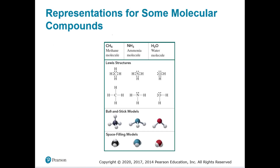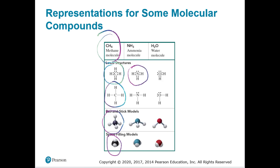Let's look at a couple examples. Methane, or CH4 — you already saw the Lewis structure with dashed lines instead of dots, the ball-and-stick model, and the space-filling model. Here's ammonia, NH3. It looks similar to CH4, except there's no fourth H, because nitrogen has five outermost electrons.